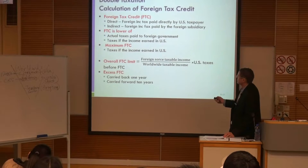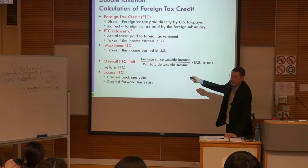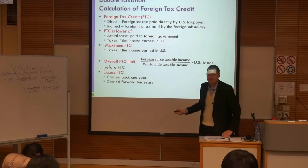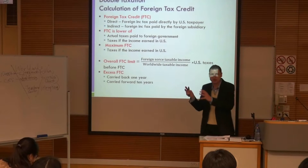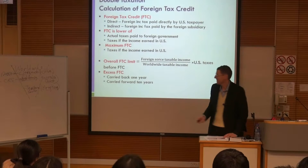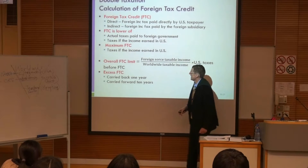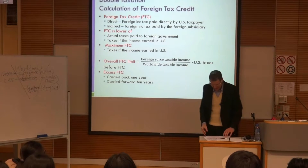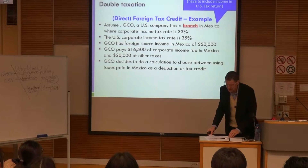Let's look at a foreign tax credit example calculating double taxation. When we say 'direct,' we mean a branch, and 'indirect' means a subsidiary. A branch is treated like an individual person. The foreign tax credit is the lower of actual taxes paid or the taxes if the income were earned in the US. You can carry it back one year or carry it forward ten years.